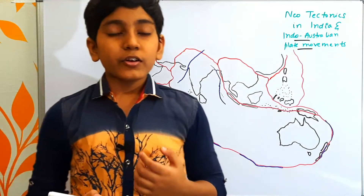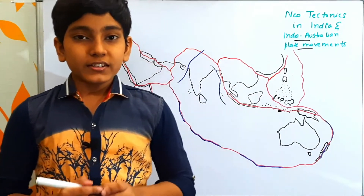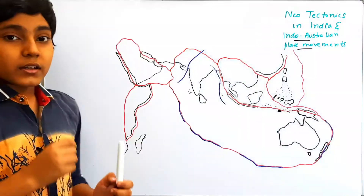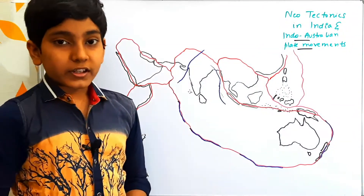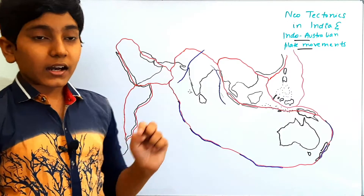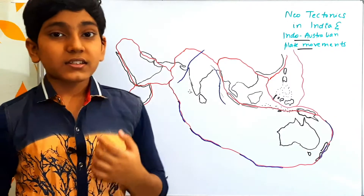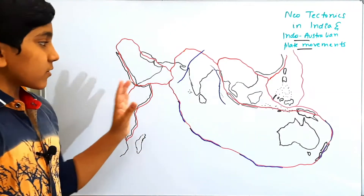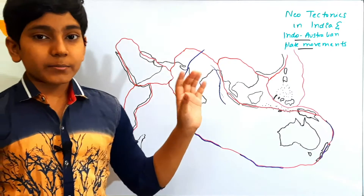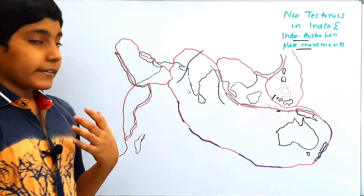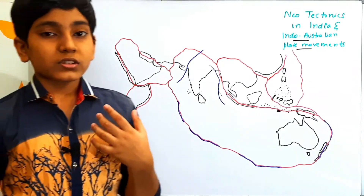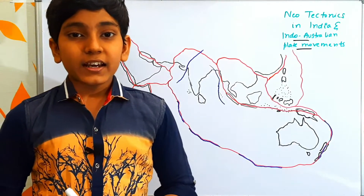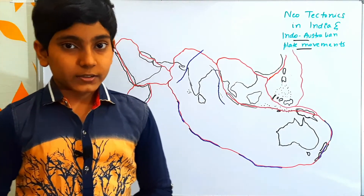We will be looking at a brief geological history of the Indo-Australian plate movements. Before going to that, the area under the red-colored shaded region in this map is a plate. First, let us look at all the plates mentioned here and then move on to some important activities in the history of the Indo-Australian plate.